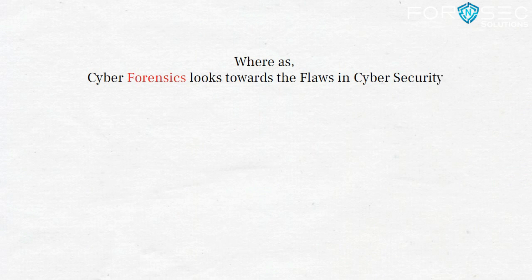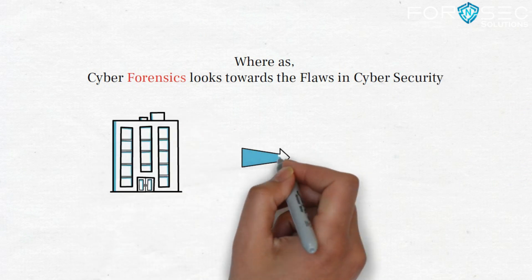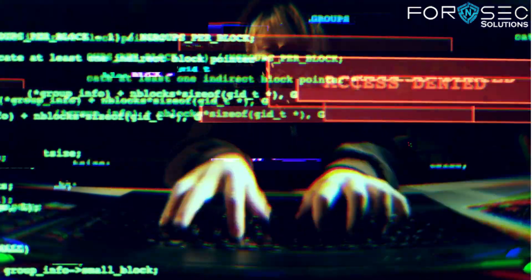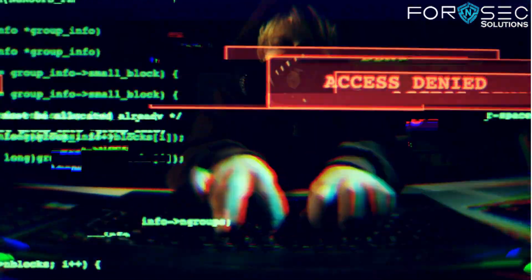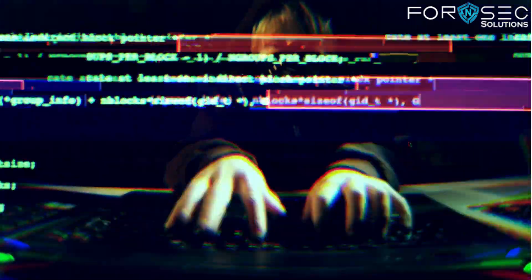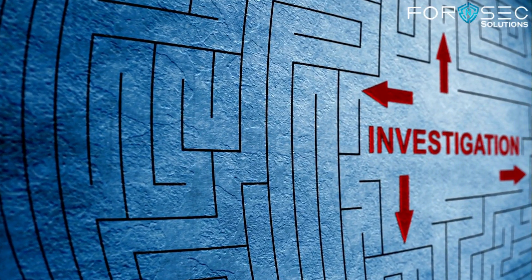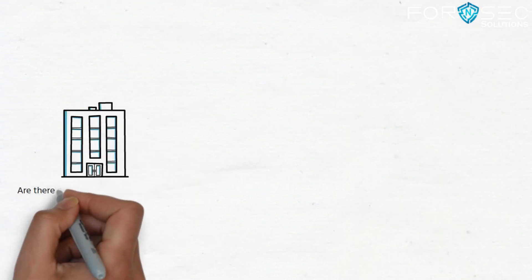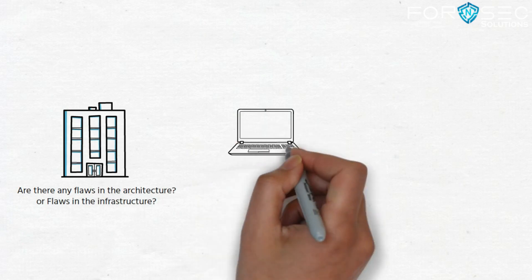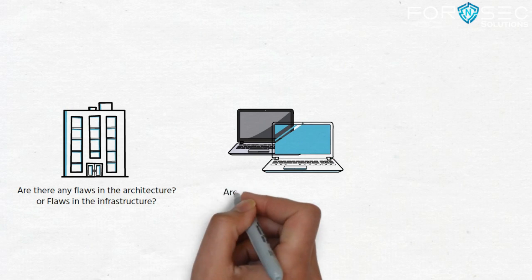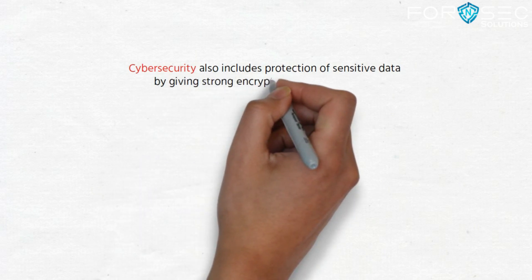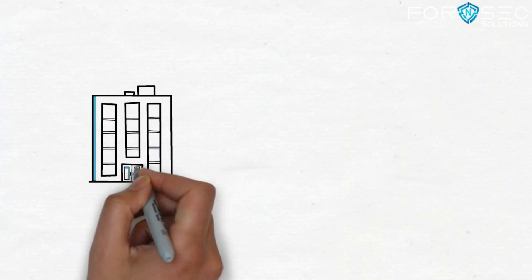Cyber forensic, on the other hand, looks towards the flaws in cyber security. For example, if a company has a very large organization and they have taken many protective measures like firewalls and other things, but if a cyber attack still happens or there is something they missed — like not installing a particular protection device — and their company suffers a cyber attack, then the investigation of how that cyber attack occurred is called cyber forensic. The cyber forensic analyst will investigate whether there were security flaws in the architecture or infrastructure, or whether the devices used were not updated.